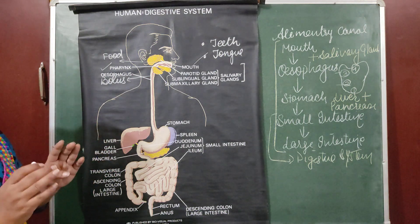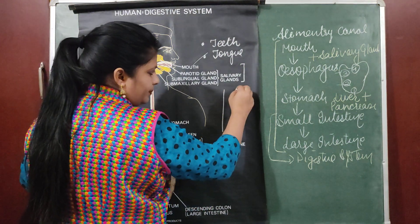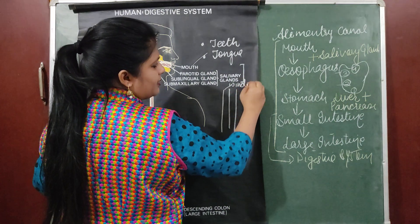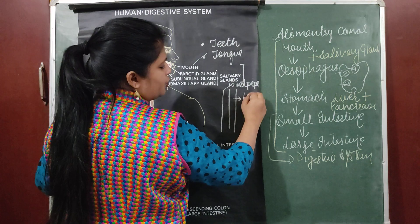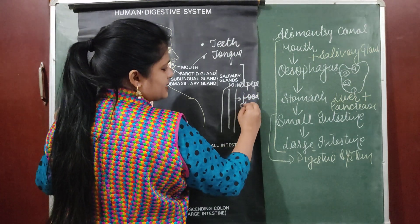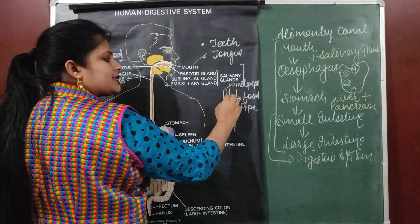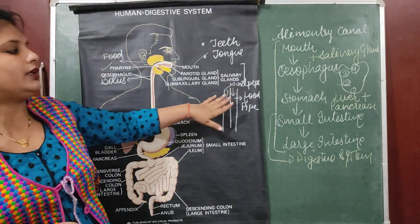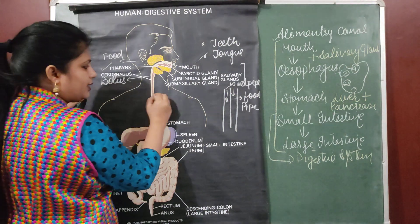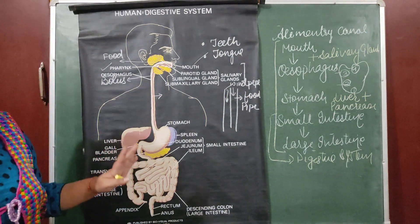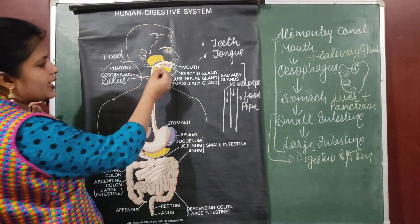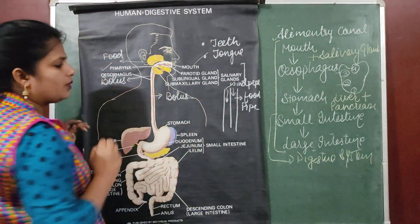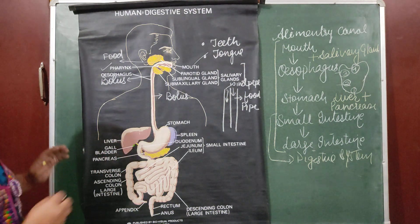The bolus will enter into a tube called the pharynx. The pharynx is a common tube which consists of two tubes: one is the windpipe, which is the trachea, and the other is the food pipe, which is called the esophagus. Gases like oxygen for respiration enter through the trachea, while food enters through the esophagus. The esophagus is just a tube which carries food from the mouth to the stomach — no digestion takes place here.